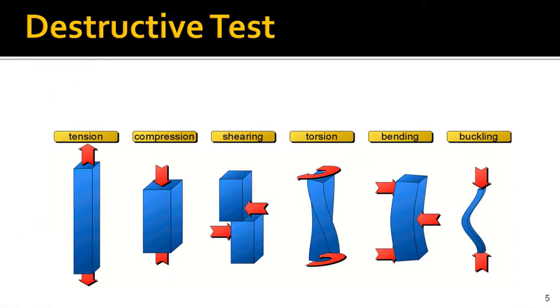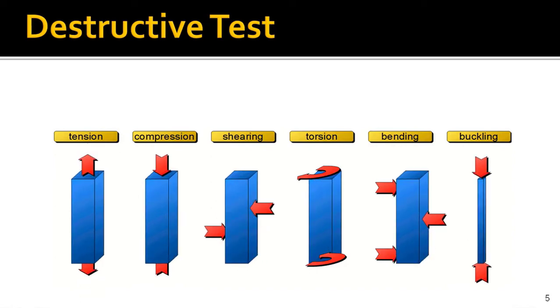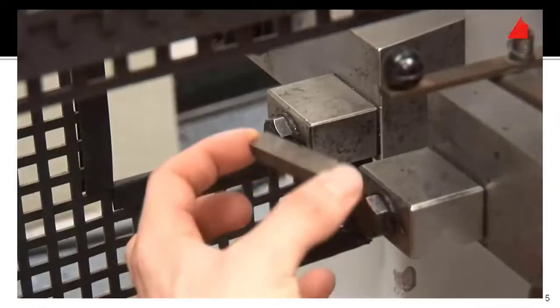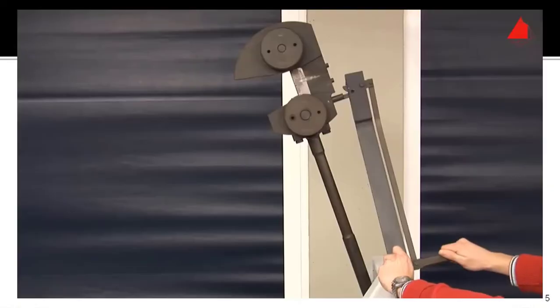It means if you are testing a particular specimen or part, you cannot use that specimen again and again, because it will be destroyed during testing. When you do a tension test, compression test, shear test, bending test, buckling test, etc., you use a certain specimen and break it down to determine the properties of the material. So that is destructive in nature.